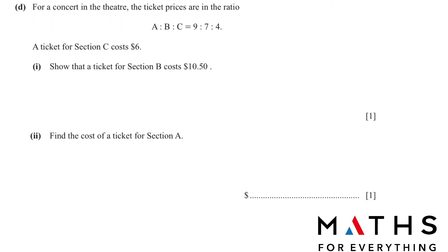For a concert in the theater, the ticket prices are in the ratio A:B:C is 9:7:4. A ticket for section C costs $6. Show that a ticket for section B will cost $10.50. There are 2 ways to solve it. One way is section C has been given to you, so write 6 divided by what part does C have? This is 9, 7 and 4. So C is 4, so divide by 4, multiply by 7. We can write it either 6 divided by 4 over 7, and this will give us 10.5.